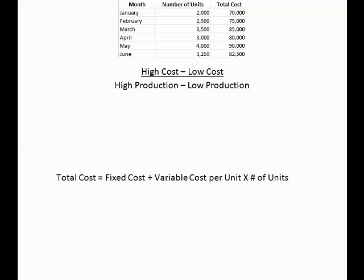The first step in separating the fixed cost and the variable cost out of the mixed cost is to find the variable cost per unit. We do that by this formula: high cost minus low cost divided by high production minus low production.